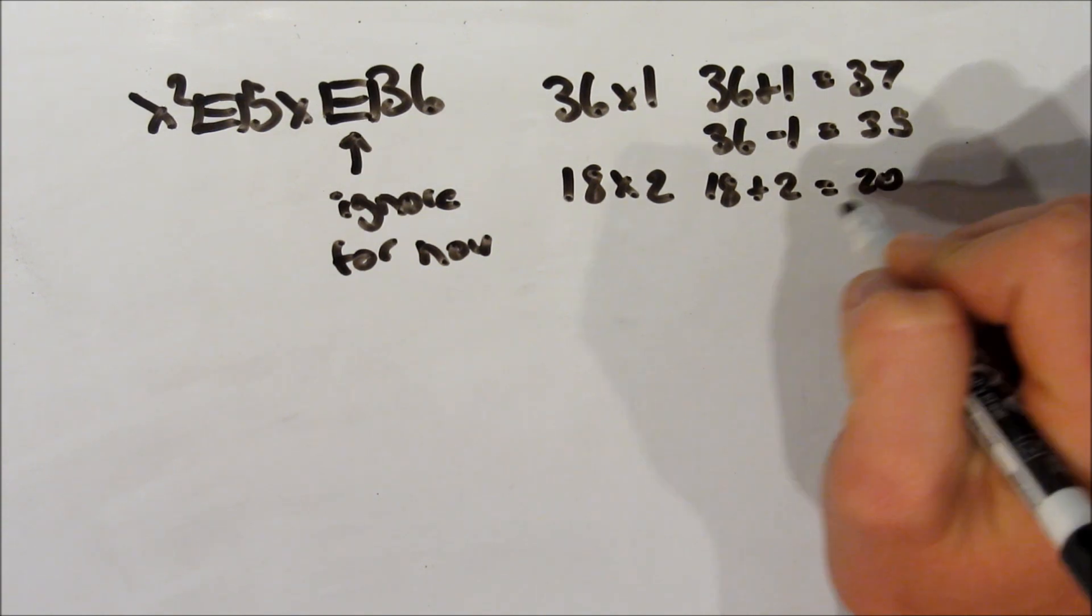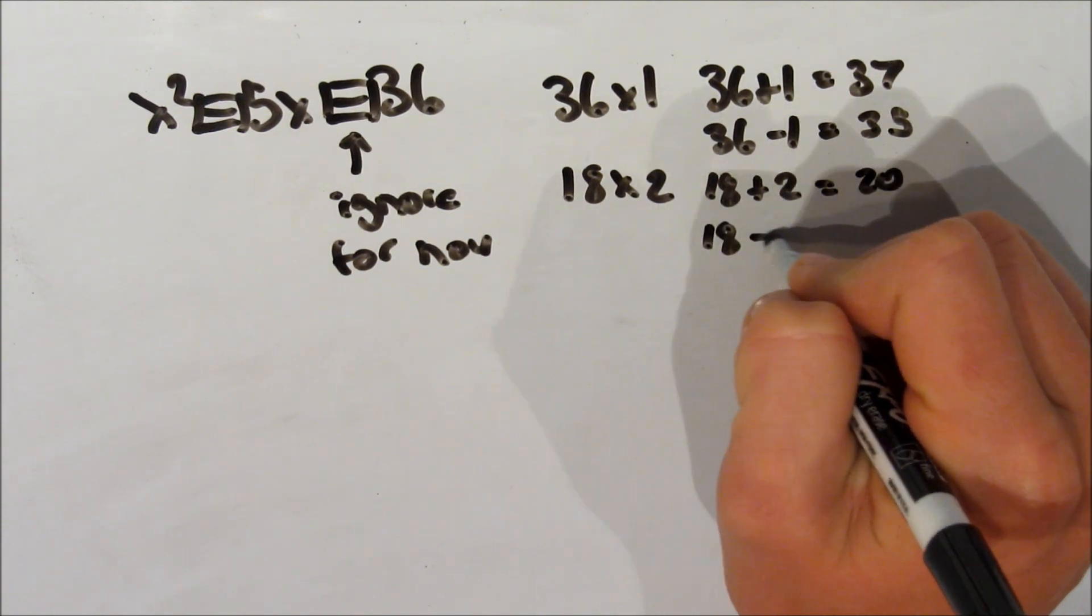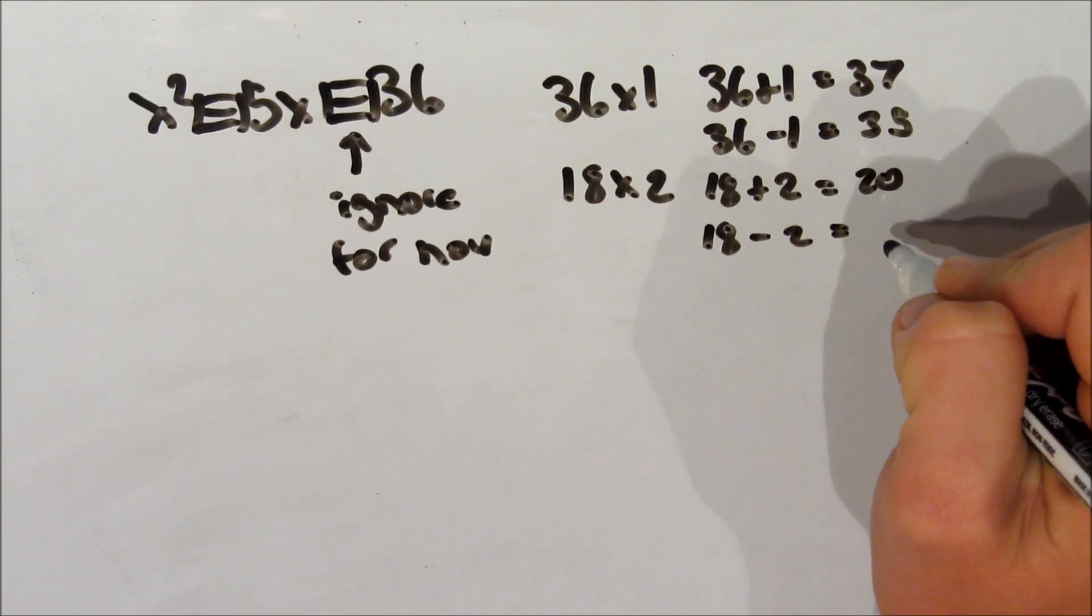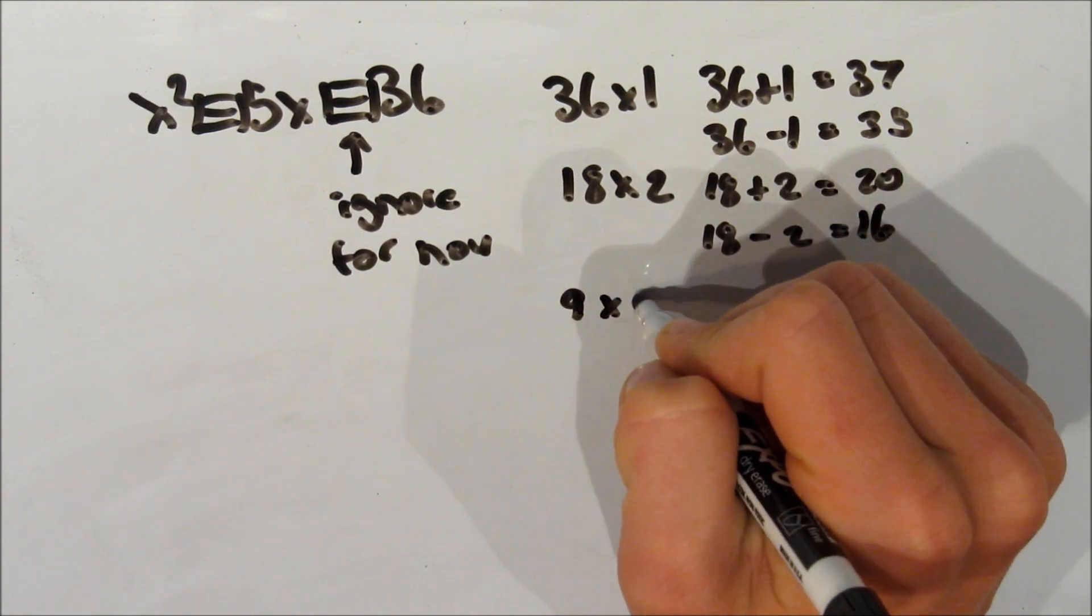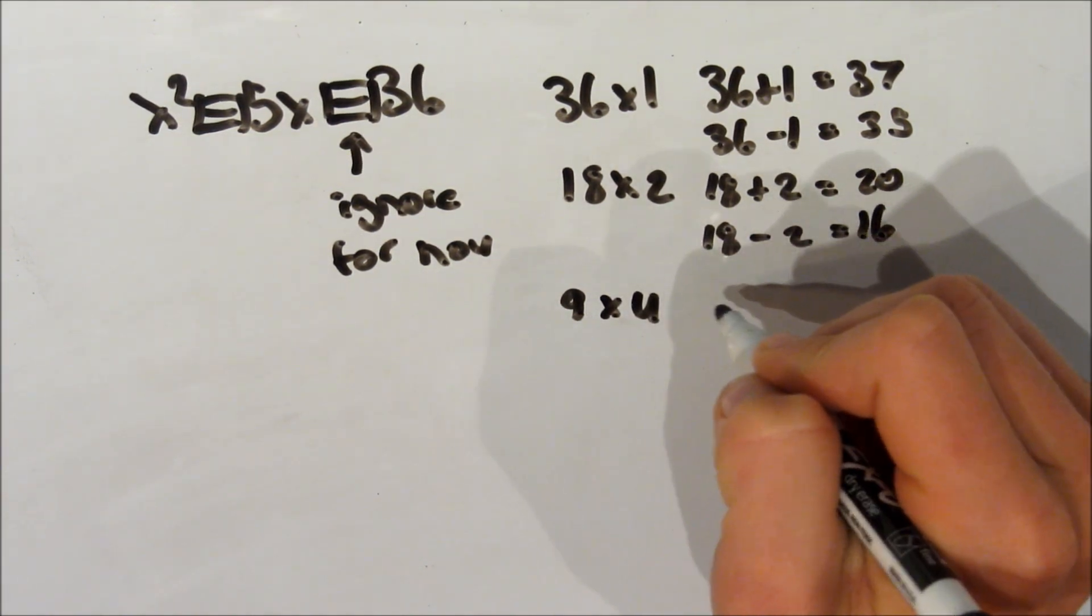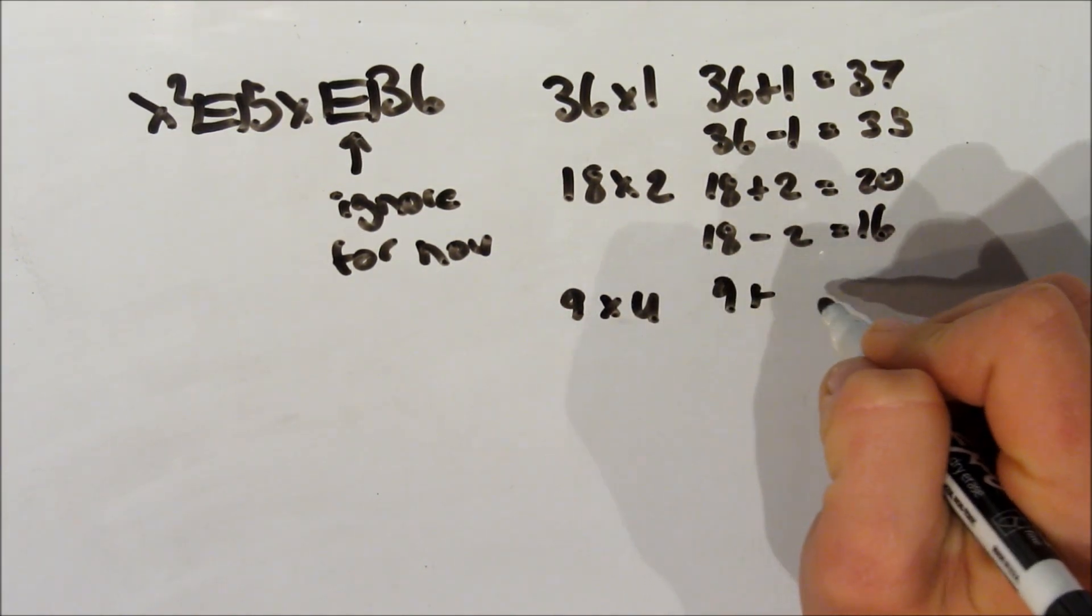We take half, say 18, and double the second factor, which is 1. Just an easy way to find the next factors of 36. Except we look at 18 plus 2, that gives you 20. That's not 5. 18 minus 2 equals 16. That's not 5.